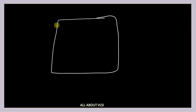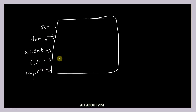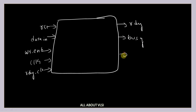So this is my top module, and this top module is going to have inputs: reset, data_in, write enable signal, clock signal, and ready_clear signal as my inputs. And outputs: I am going to have a ready signal, a busy signal, and a data_out signal.